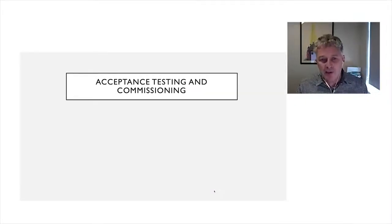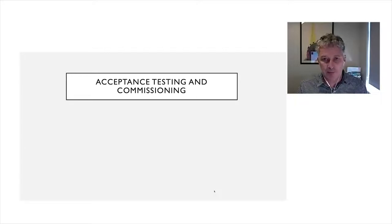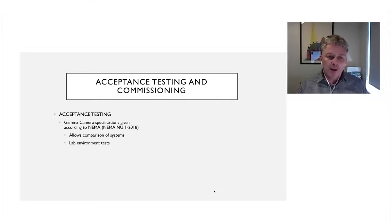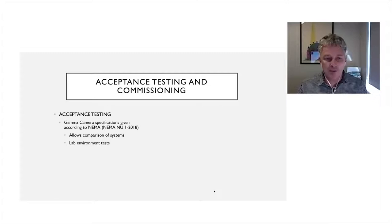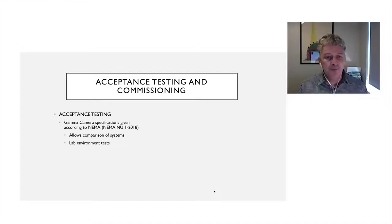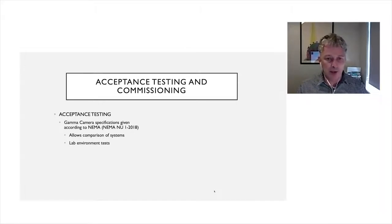In this presentation I'm focusing mostly on quality control, but it's worth briefly touching on acceptance testing and commissioning. All gamma cameras have specification sheets. Manufacturers like Siemens, GE, Mediso, or Philips will give you a list of specifications for things like spatial resolution or energy resolution. These are generally defined by the body called NEMA — a North American body used internationally. For gamma cameras, these specifications are listed in document NEMA NU 1-2018.